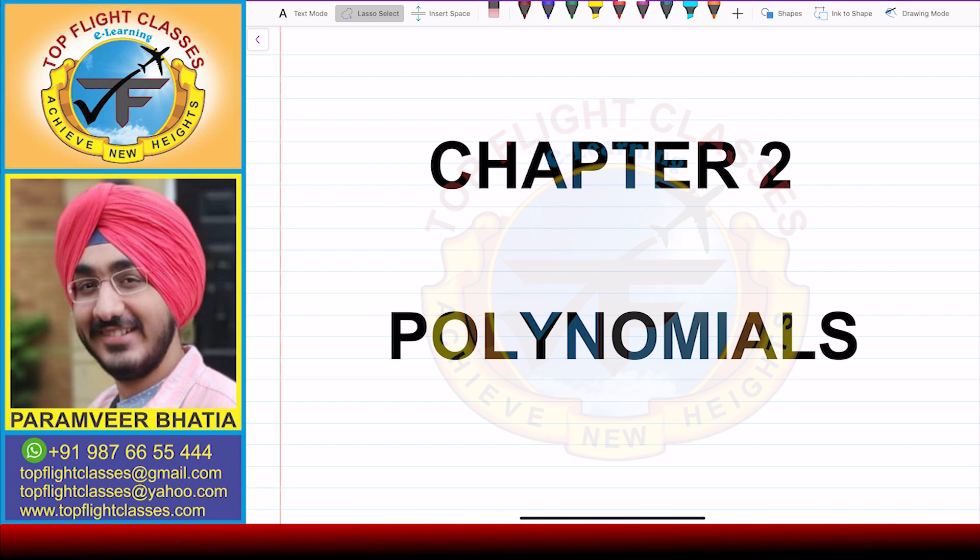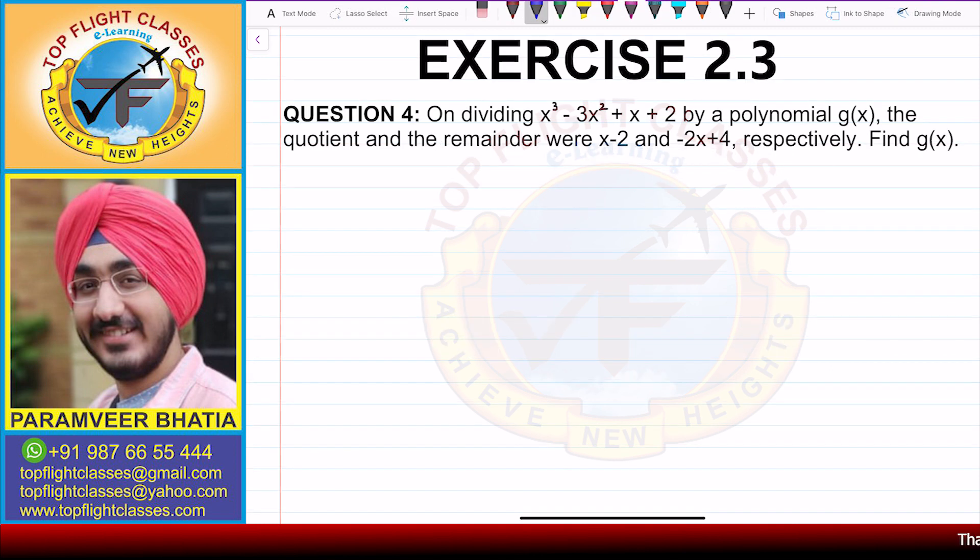Hey guys, welcome to my channel Top Flight Classes. In this video we are going to solve question number 4 of exercise 2.3. The question says: on dividing x³ - 3x² + x + 2 by a polynomial g(x), the quotient and the remainder were x - 2 and -2x + 4 respectively. Find g(x).